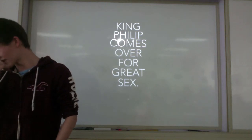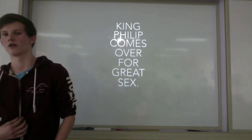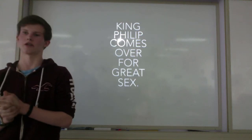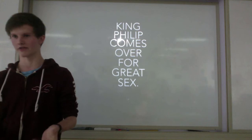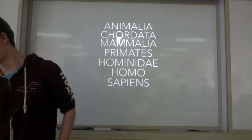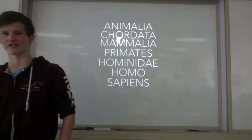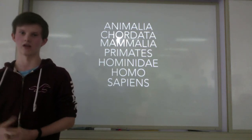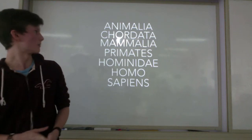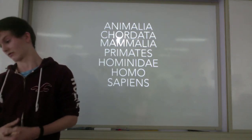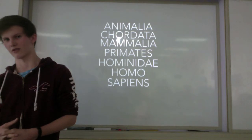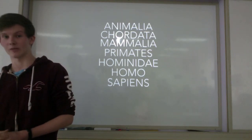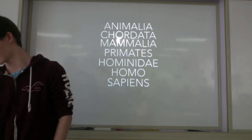In our syllabus we also have to know five different phyla and be able to classify them and give examples. Here's how you classify Homo sapiens: Animalia is the kingdom, Chordata is the phylum, Mammalia is the class, Primates is the order, Hominidae is the family, Homo is the genus, and Sapiens is the species.